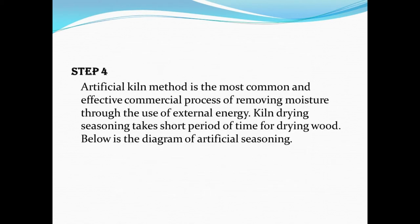Step 4: Artificial kiln method is the most common and effective commercial process of removing moisture through the use of external energy. Kiln drying seasoning takes a short period of time for drying wood. Below is the diagram of artificial seasoning.